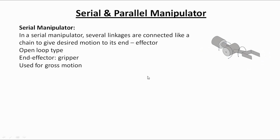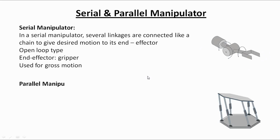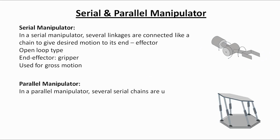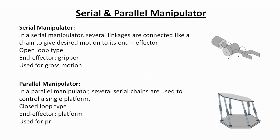The second one is the parallel manipulator. In a parallel manipulator, several serial chains are used to control a single platform. It is of closed loop type. The end effector here is a platform to which several things can be attached. This is used for very precise positioning.